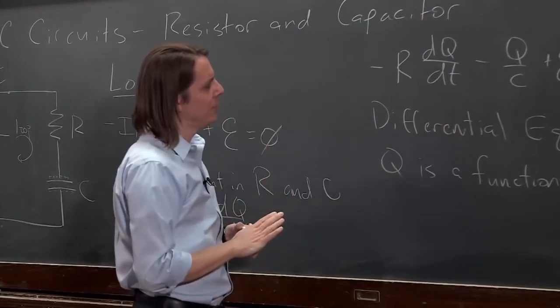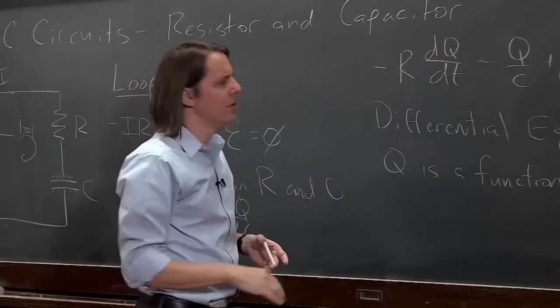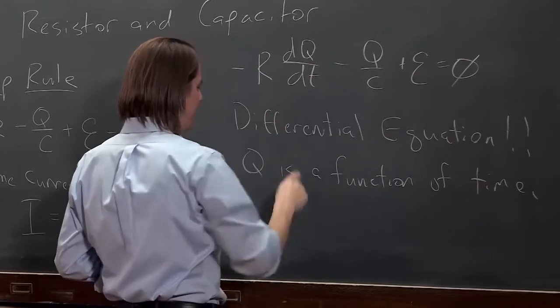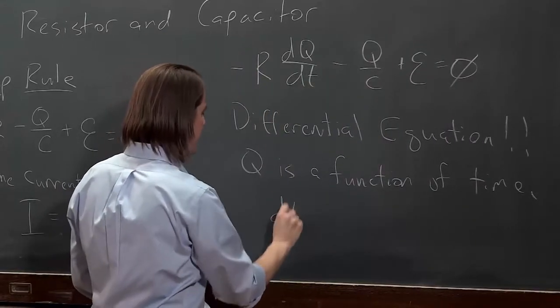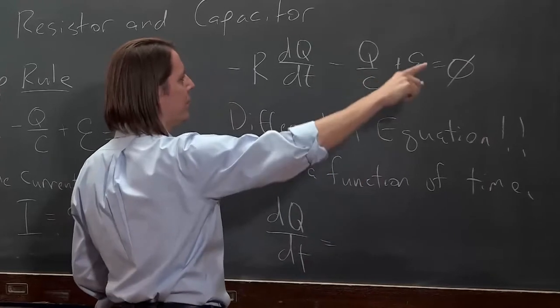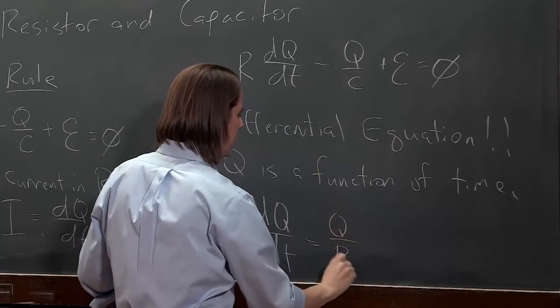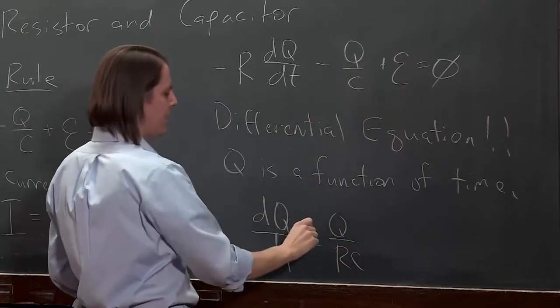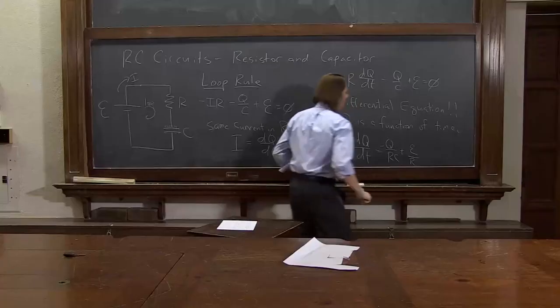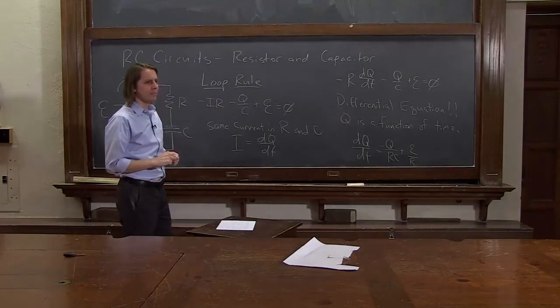So step one in solving this differential equation, usually the first thing you want to do is get the differential part by itself. So let's just write it real quick. We're going to bring this over here to make it positive and divide through by the R and get dq dt equals, we brought over there, divided by R, is q over rc. It's minus q over rc plus the emf over R. So now we've just got to go through and solve that.